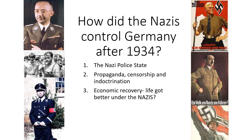So for today's lesson, if you could put this heading: how did the Nazis control Germany after 1934? And just put these three sub-headings as a kind of list. Number one, the Nazi police state. Number two, propaganda, censorship and indoctrination. Number three, economic recovery — life got better under the Nazis. And in today's lesson, we're just going to look at the first of these, the Nazi police state. Maybe just pause the video so you can get this copied down into your book.